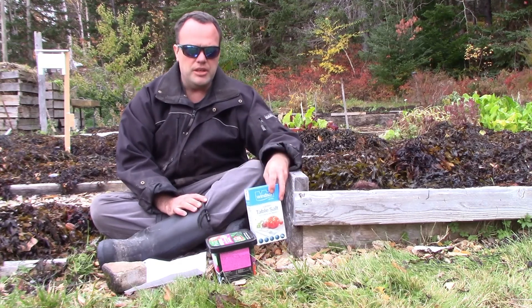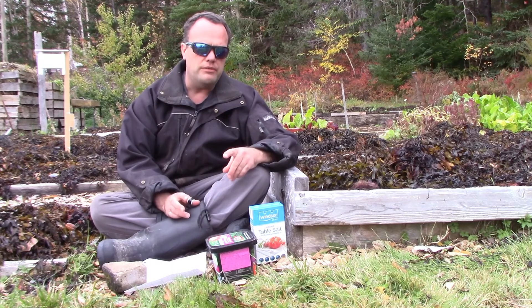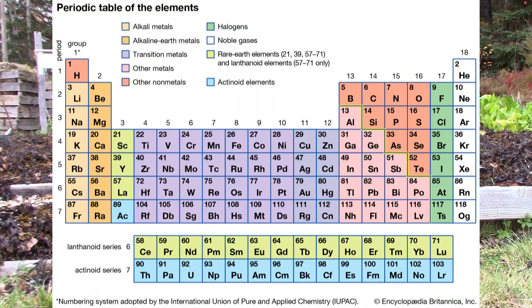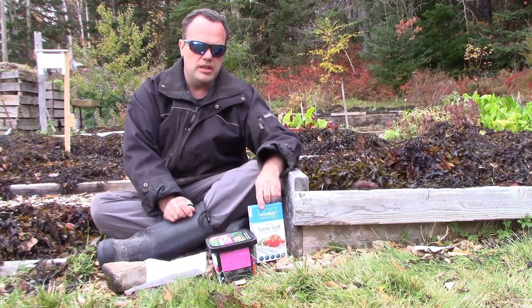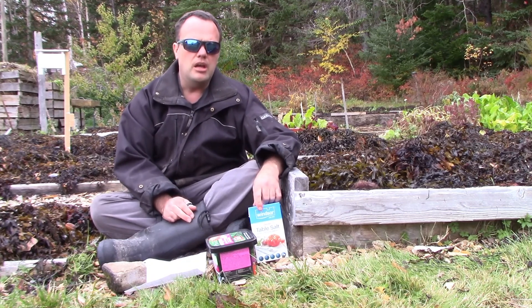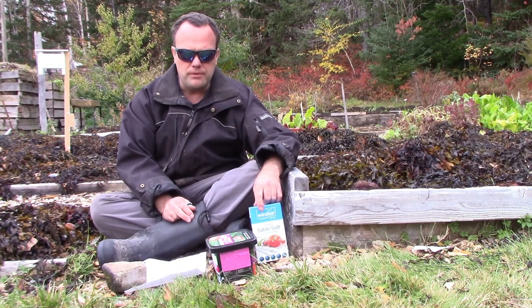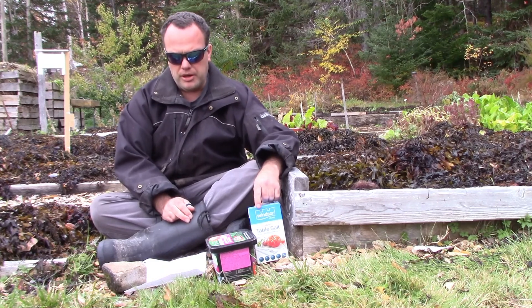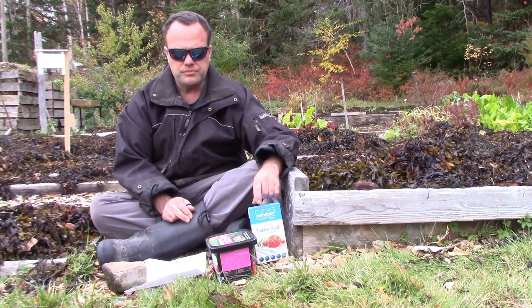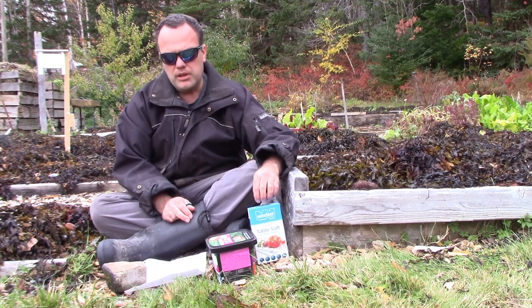To a chemist, a salt is actually an ionic combination of a metal and a non-metal, as shown in the periodic table. Table salt is actually sodium — the metal — and chlorine — the non-metal — making sodium chloride.